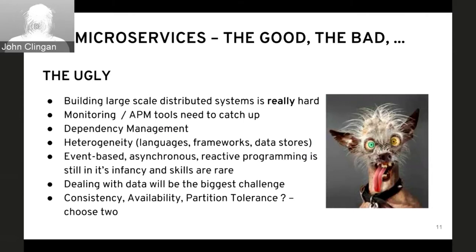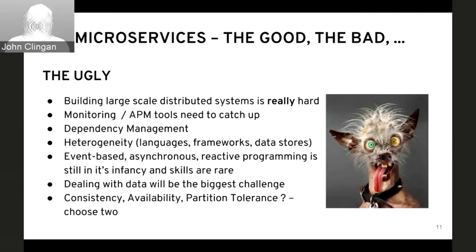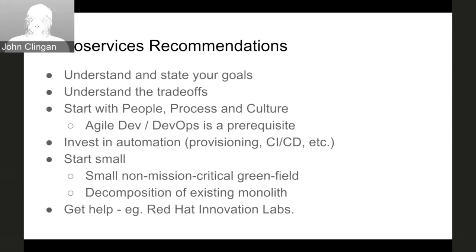With a monolith you may have spaghetti code, but at least there's no network between service calls. If you don't design your microservice boundaries properly, you've introduced a network, which increases latency significantly. How does one service locate another? How do I configure that service in a way not tied specifically to that service? These are things inherent in the monolith with Java EE that now we have to solve in the microservices world.